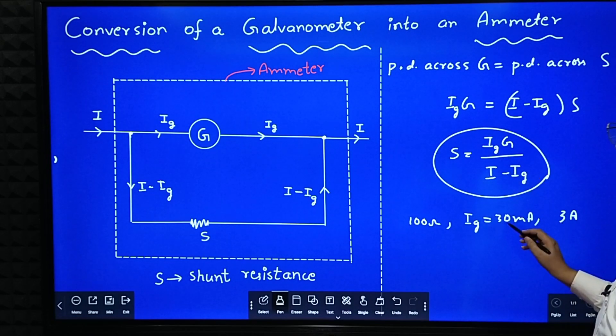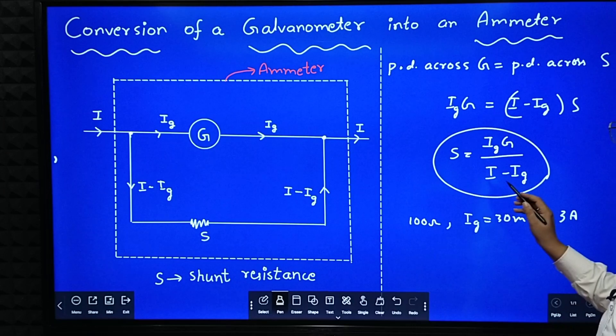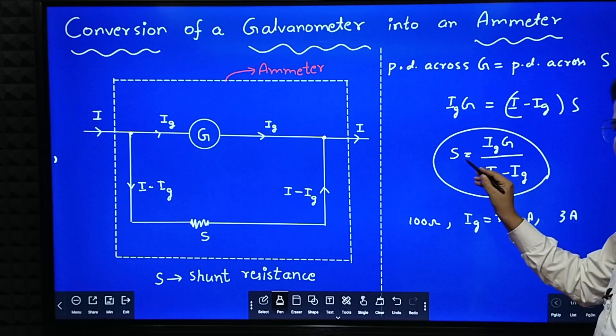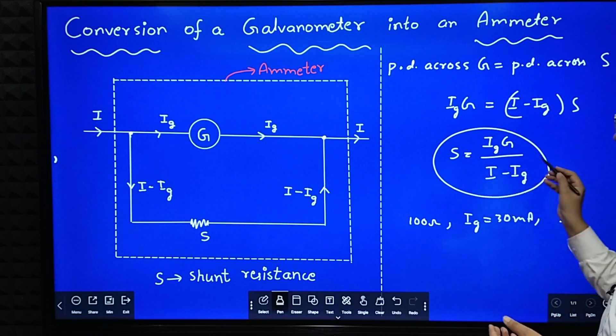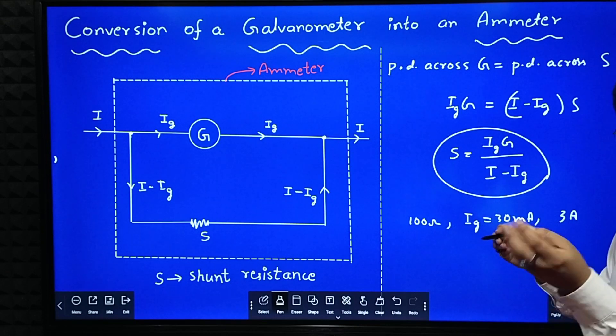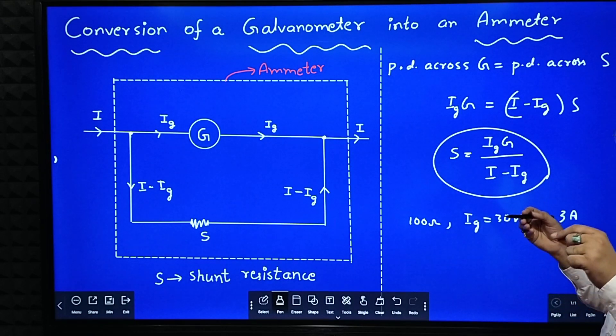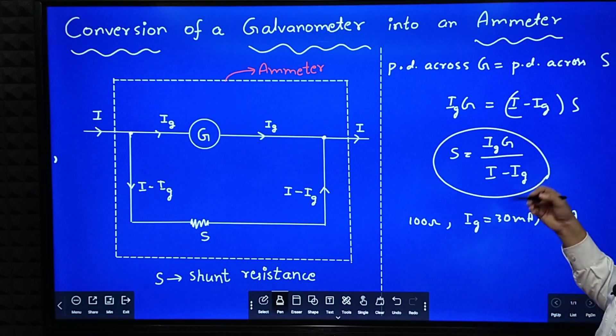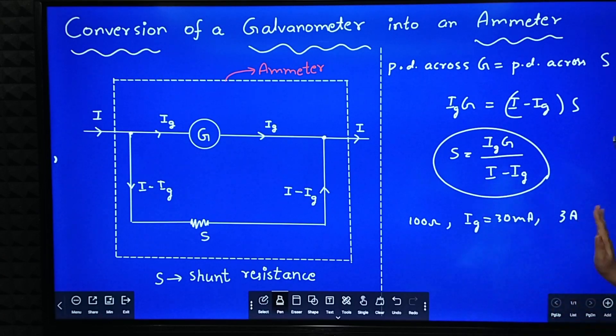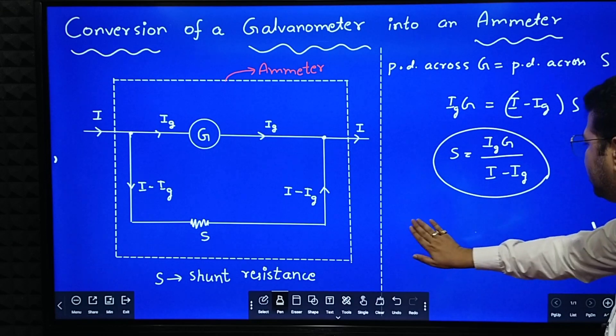Then what you have to do? In the place of Ig, you substitute 30 milliampere. Galvanometer resistance you substitute 100 ohm. Main current is 3 ampere. Then you will get some value for shunt resistance. Say you will get answer some 2 ohm. Then you have to write, 2 ohm resistance has to be connected in parallel with the galvanometer in order to convert this galvanometer into an ammeter of range 3 ampere. Like that problem may come.